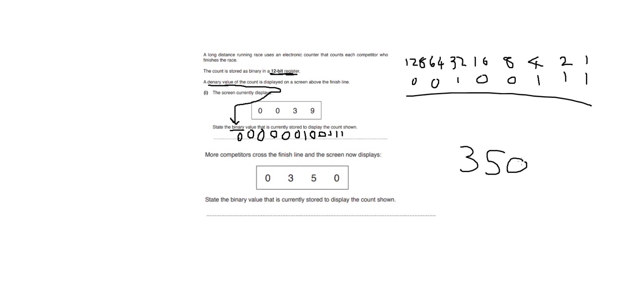The second part of that question is the same but for 350 — I won't work through it here. If you got it wrong, try again and check your math. My advice is to add or subtract two numbers at a time when doing this. The next question asks us to convert a binary number to hexadecimal.